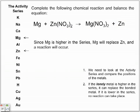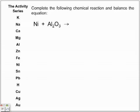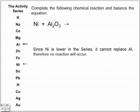You will be given a list like the activity series. Complete the following chemical reactions: nickel and aluminum oxide. Looking at nickel and aluminum in the activity series — aluminum is more reactive. Nickel is lower in the series, so it cannot replace aluminum. Therefore, no reaction. When writing out your equation, you can write NR for no reaction.